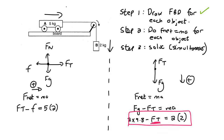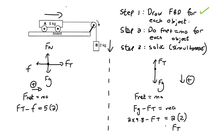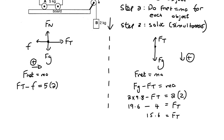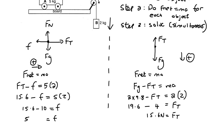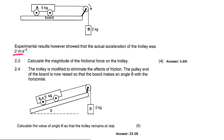Solving for FT: 19.6 minus 4 gives us a tension force of 15.6 newtons. Then we take that tension force and use it in the five kilogram equation: 15.6 minus the friction force equals 5 times 2. Bringing friction to the right and 10 to the left, we find that the friction force is 5.6 newtons. We have now finished question 2.3.